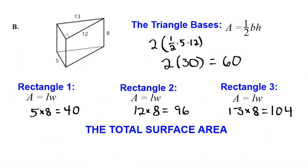Total surface area. I'm just going to add all of those numbers up. So I got my 60, 40, 96, 104, and I get 390 square units for the entire thing.